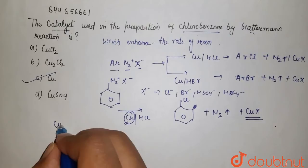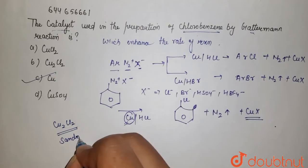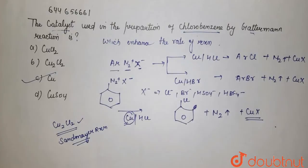In Sandmeyer reaction you have used this, but in Gattermann reaction copper acts as a catalyst and formation of your chlorobenzene or bromobenzene takes place.